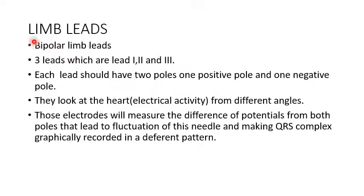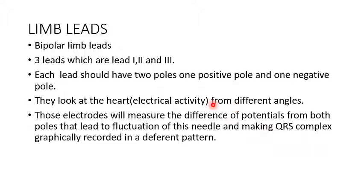Let's start with the bipolar limb leads. They are three leads: lead one, lead two, and lead three. When we say bipolar, that means every lead should have two poles — one positive and one negative. We look at the heart from a lead from different angles, and that's why we have different leads, so that we can look at the heart from different angles and have information about each part of the heart — reading the electrical activities from each part of the heart.